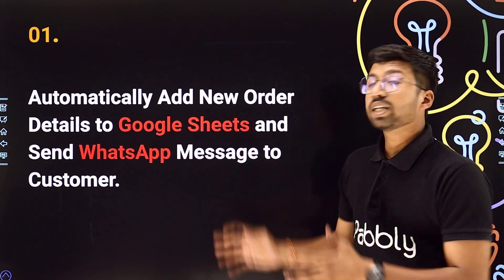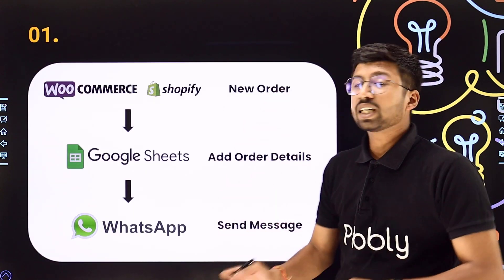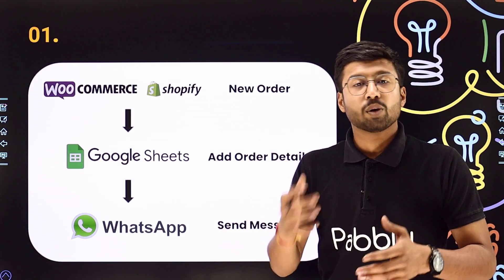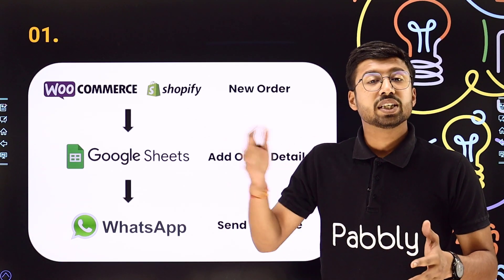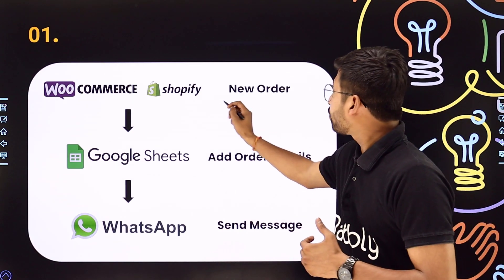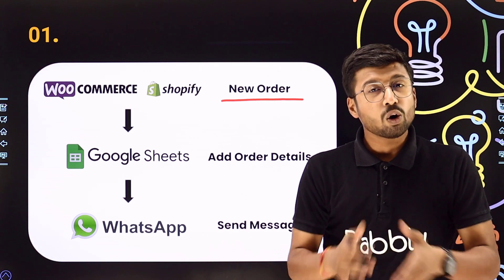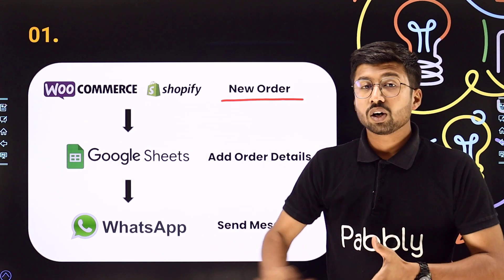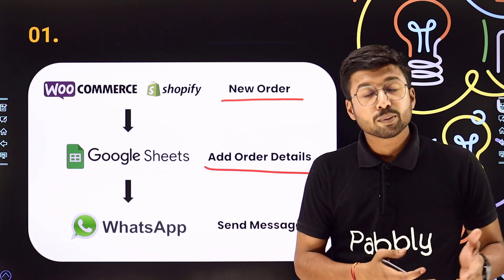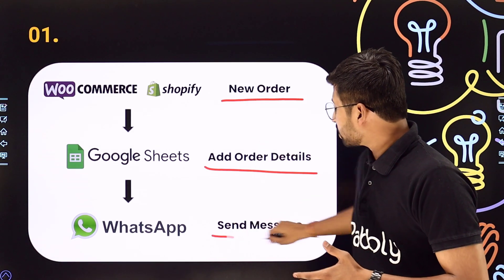The first automation is for e-commerce business owners. Using this automation you can basically connect your e-commerce tools like WooCommerce, Shopify, BigCommerce or any other platform with Google Sheets and WhatsApp, in such a way that whenever you receive a new order in your e-commerce platform, automatically you can add all the details of that order into a Google spreadsheet, and also send an order confirmation message on WhatsApp to the same customer who placed the order.